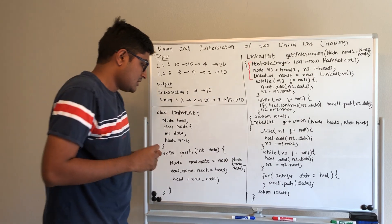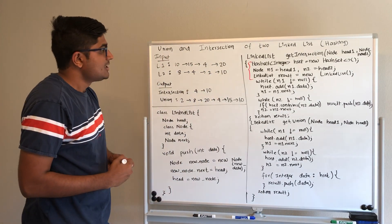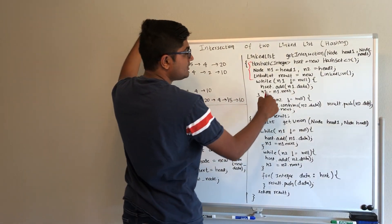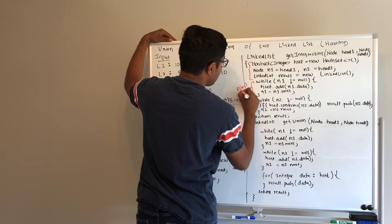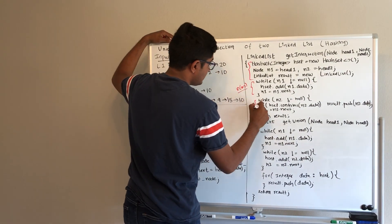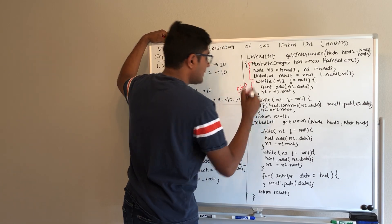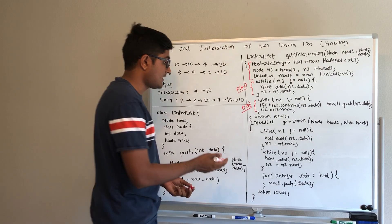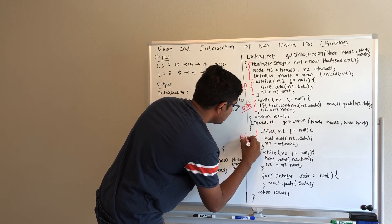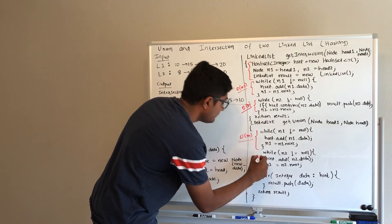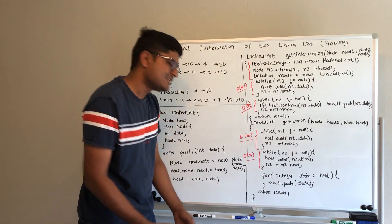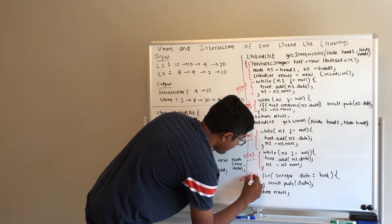For the time complexity of the intersection of two linked lists: we first go through all elements of n1 and add them to the hash set — that's O(m), where m is the size of the first linked list. Then we iterate through all elements of the second list — that's O(n). In the worst case, the overall time complexity is O(m + n), where all elements of both lists are unique.